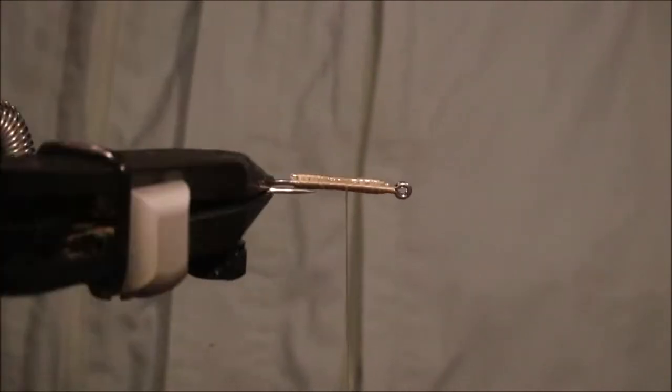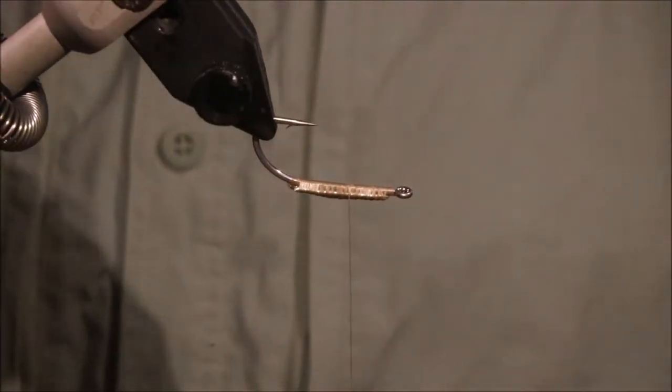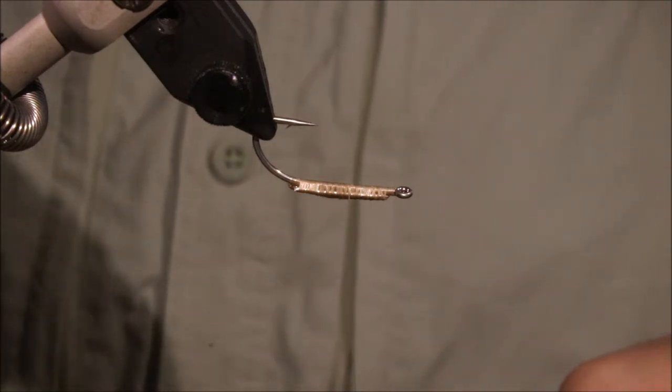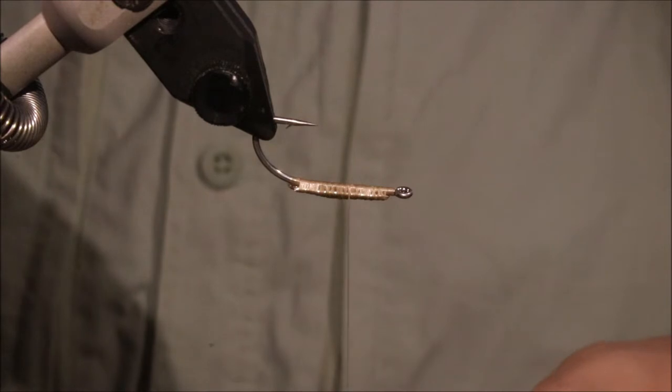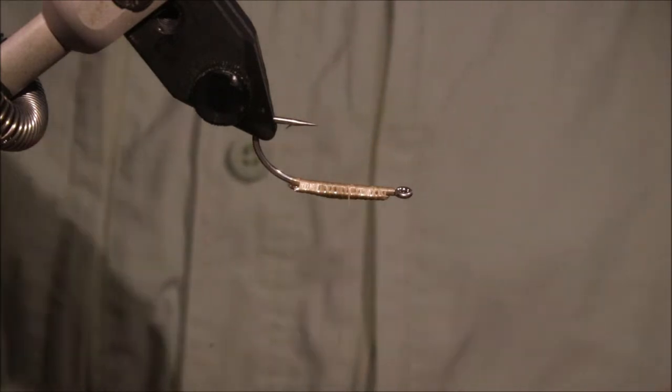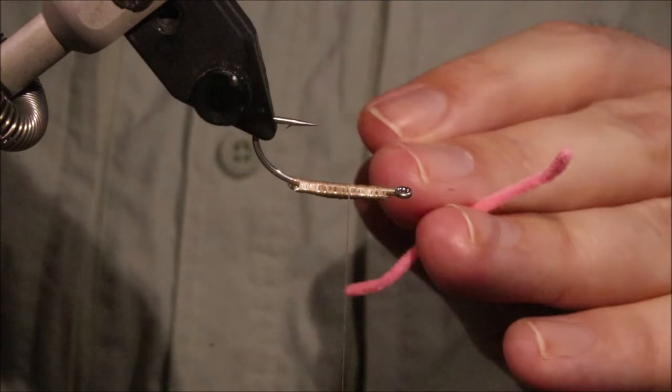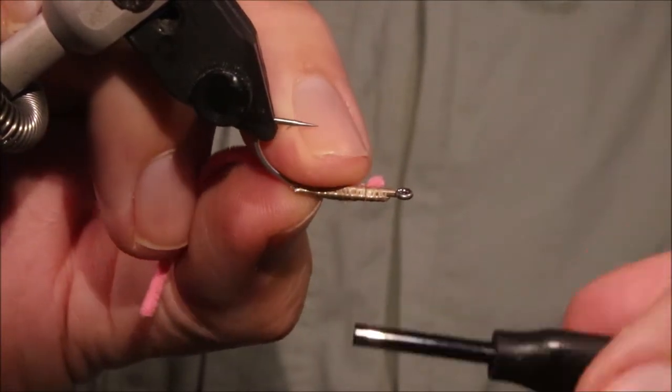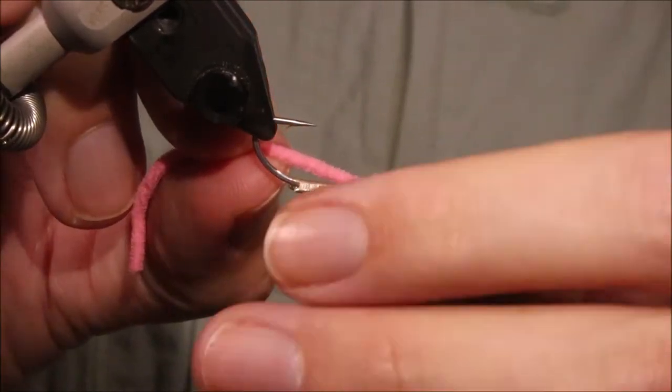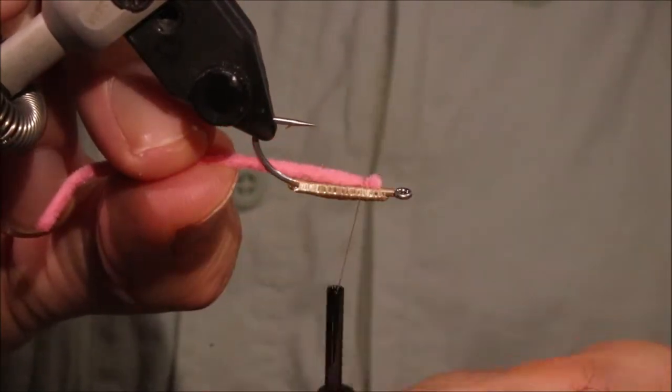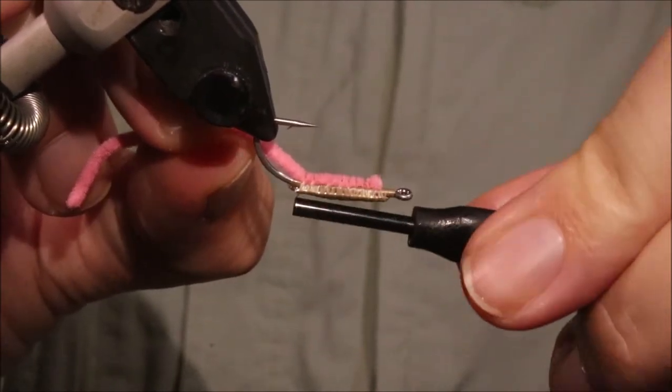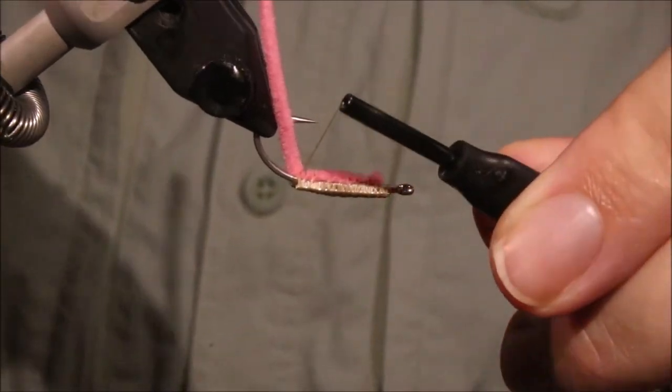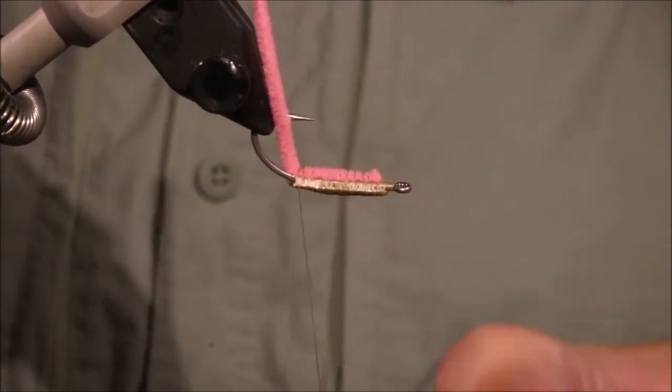The next thing we're going to tie in is the foot or siphon, and it's just ultra chenille. Cut a length, and then tie this in on the inside of the bend. Nice and secure.